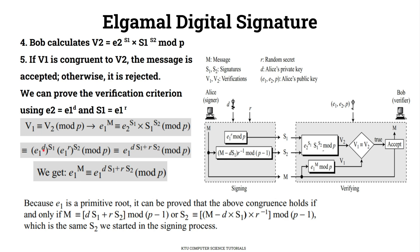D raised to D times S1, and S1 raised to S2 — where S1 equals E1 raised to R — gives E1 raised to R times S2. So V2 becomes E1 raised to (D·S1 + R·S2) mod P. For verification to hold, E1 raised to M must be congruent to E1 raised to (D·S1 + R·S2) mod P.